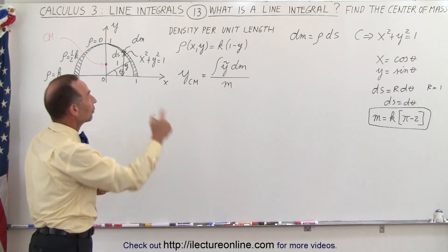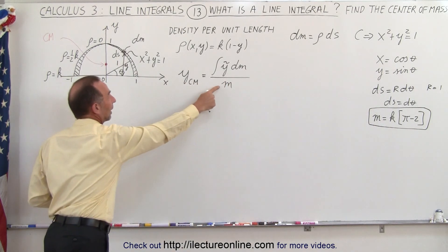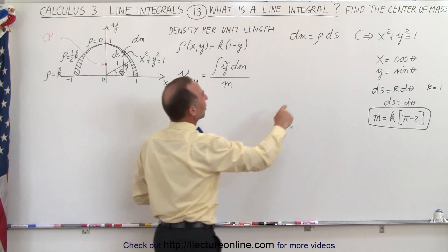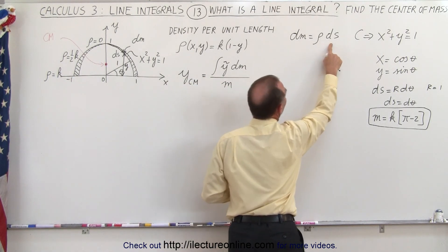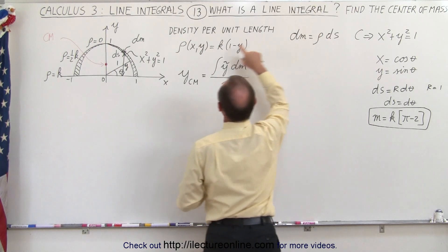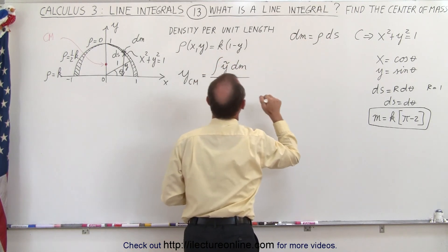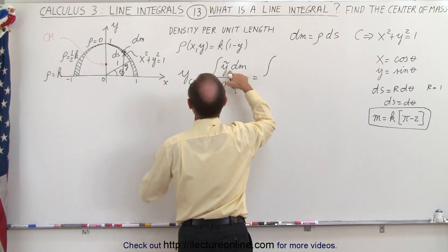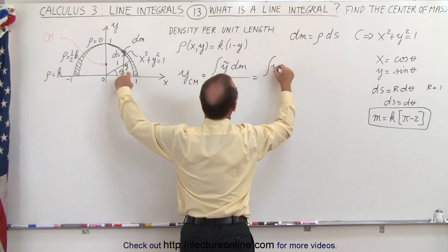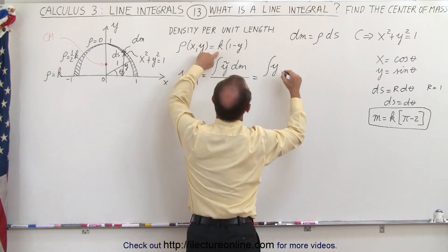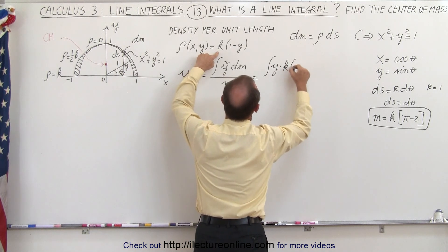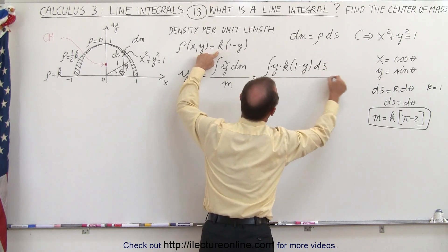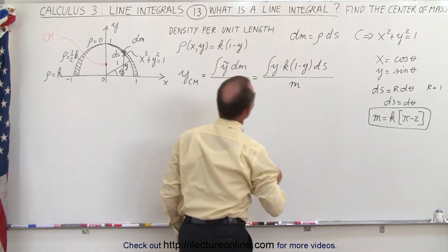If you haven't looked at the previous video, go take a look at it — that's how we find m. Now, dm is defined as the density times ds, and the density is defined as k times (1 minus y). So this becomes equal to the integral of y times k times (1 minus y) times ds, divided by the mass.